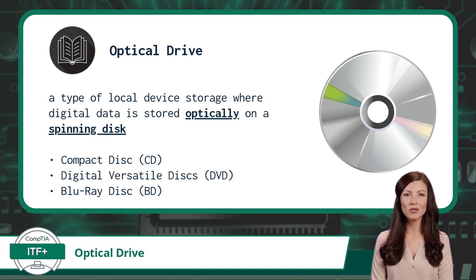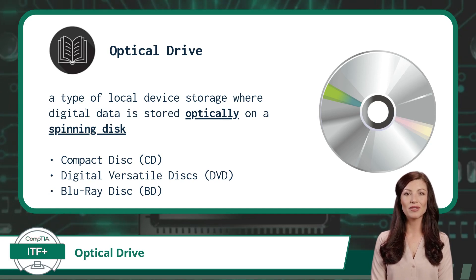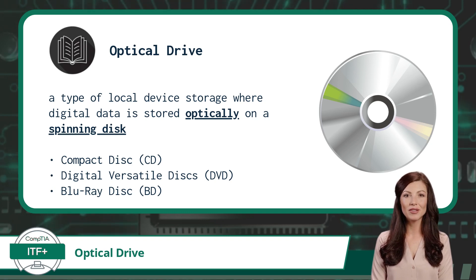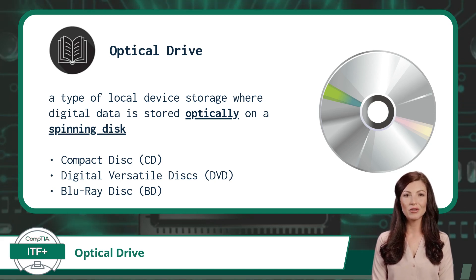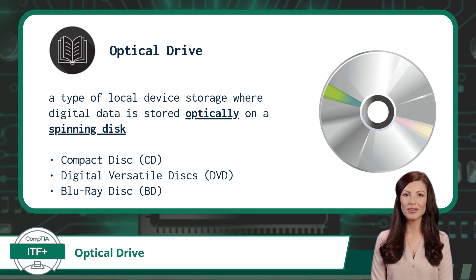As for how an optical drive works, it consists of a tray or slot where you insert the disk. When you insert a disk, the drive uses a laser beam to read the data stored on the disk's surface. The laser scans the disk, reflecting off its surface, and the drive interprets the reflected signals as digital data, such as audio, video, or computer files.